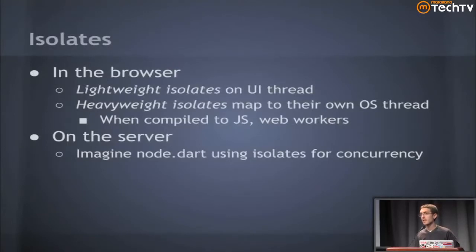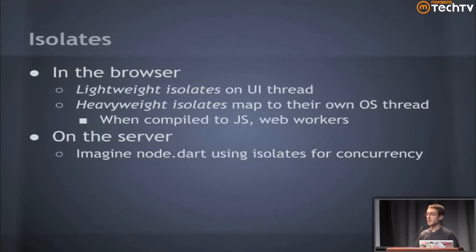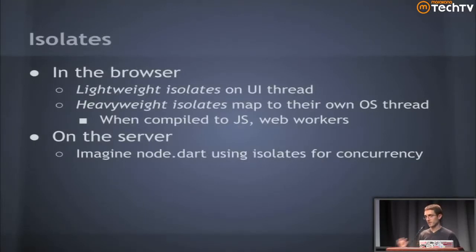Isolates will run in the browser and on the server. In the browser, if you're compiling to JavaScript, you can run lightweight or heavyweight isolates — heavyweight isolates would translate into web workers, which allows you to run JavaScript code in a separate thread. A Dart isolate can manifest as a web worker when compiled to JavaScript. Nothing about the language design of Dart intrinsically says it can't run on the server, so we completely see a world where you write Dart code and have that same code run on the server via something like node.dart and on the client via compiled JavaScript.